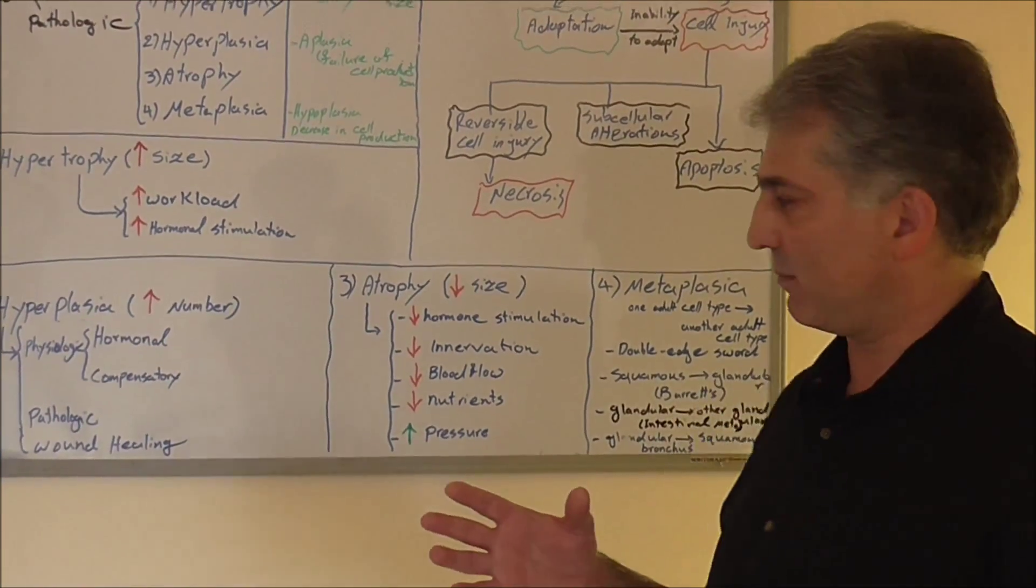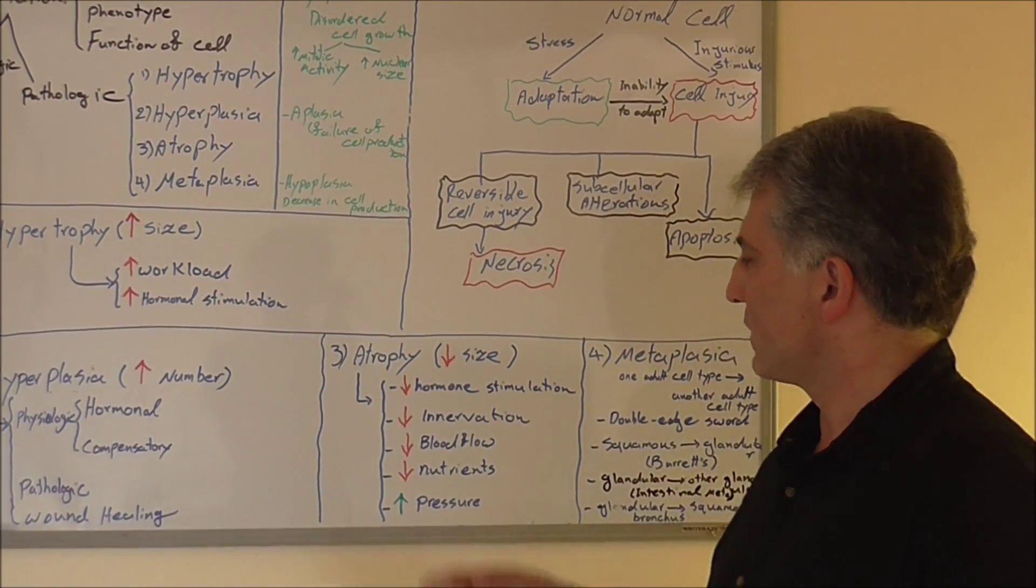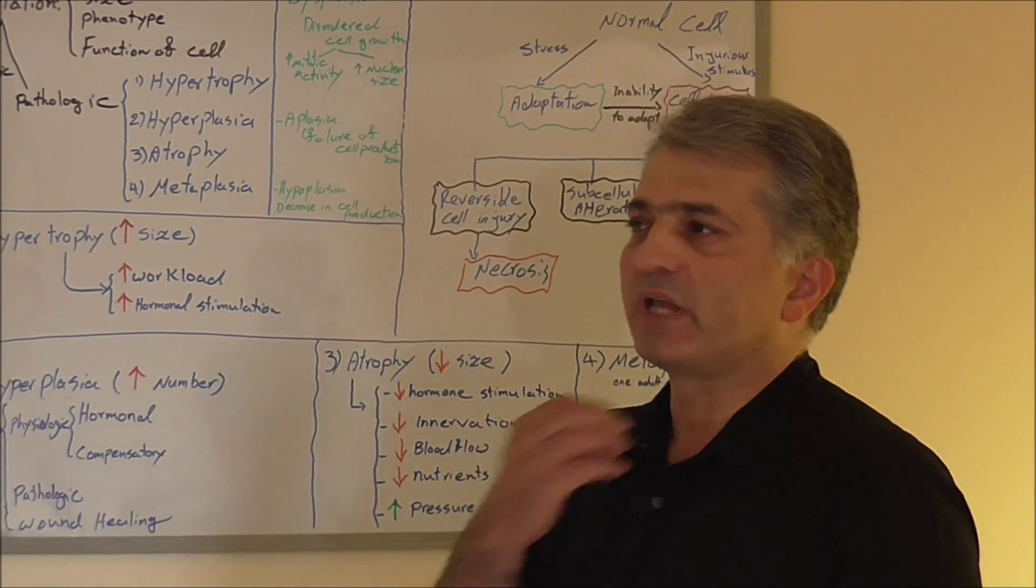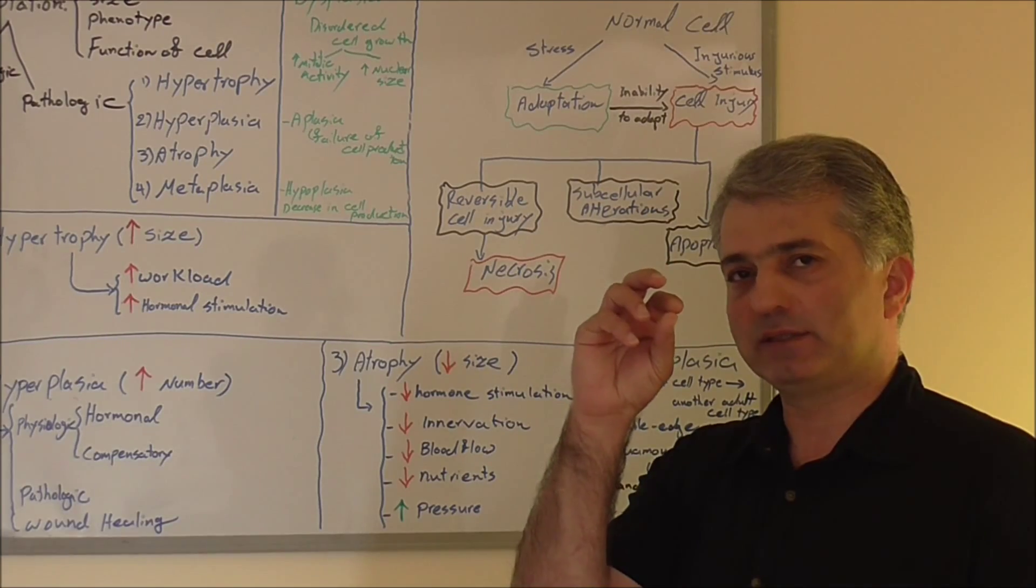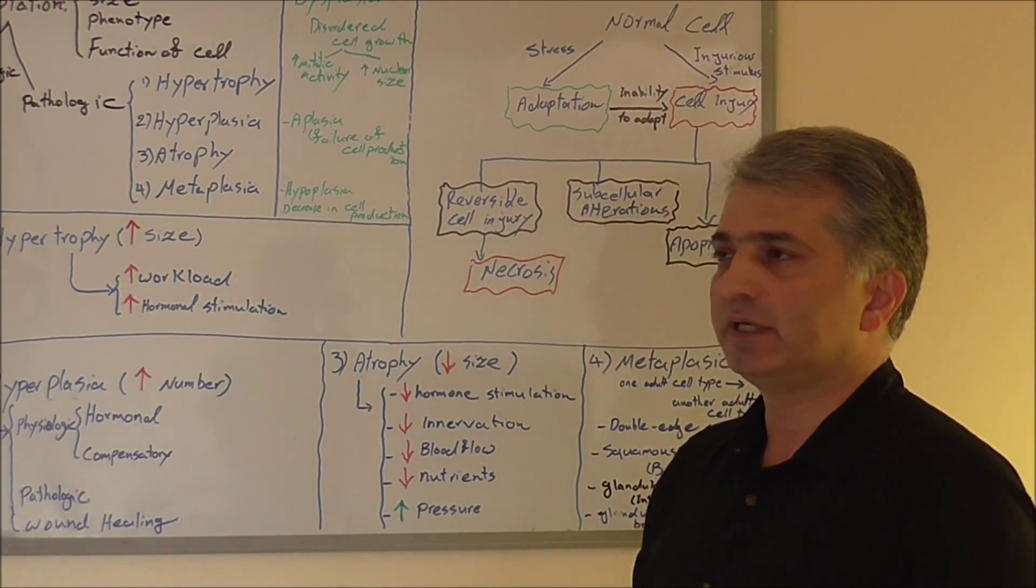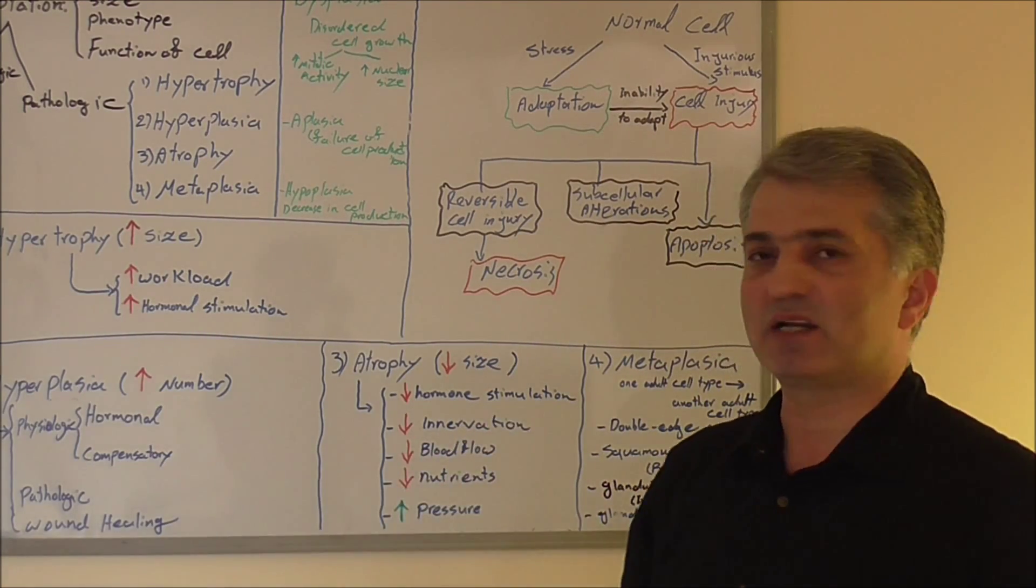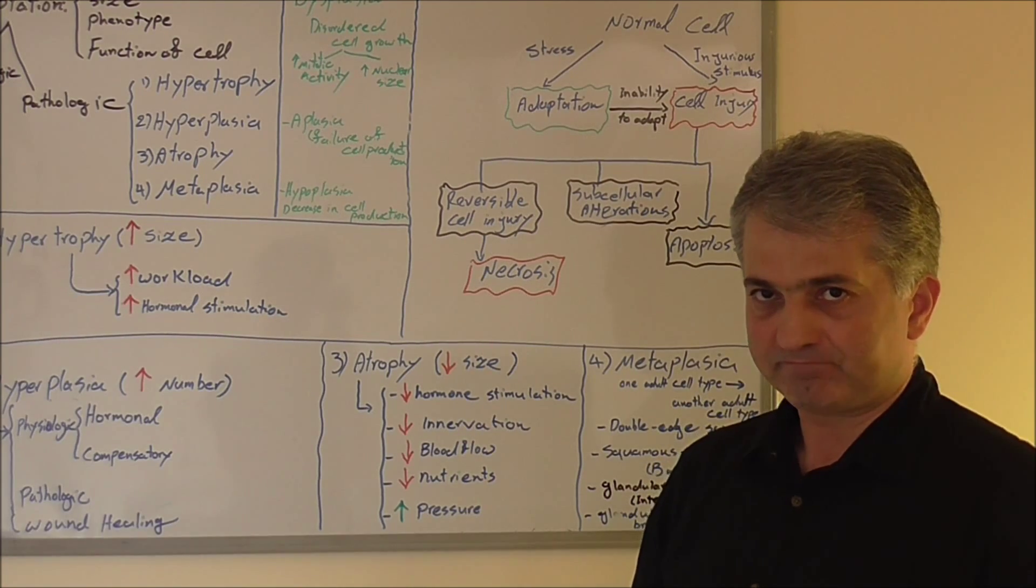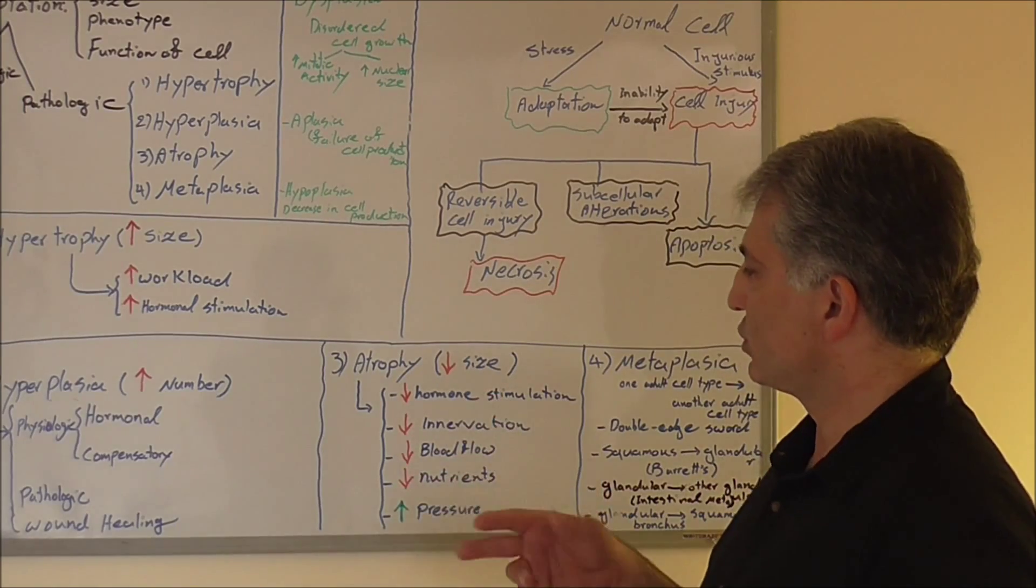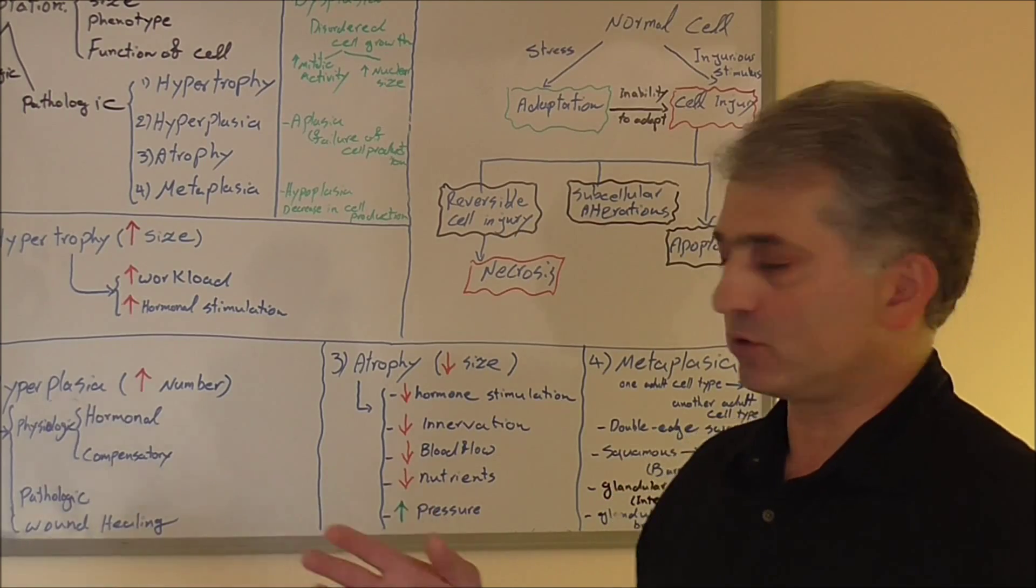Atrophy, why is it happening? Hormone stimulation. Imagine thyroid gland is controlled by the pituitary gland. Thyroid stimulating hormone activates thyroid. If there is no stimulator like TSH, the thyroid is going to respond to that, or adrenal gland, or any other. When there is no hormone stimulation, that means the target organ will be atrophic.